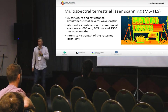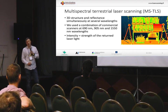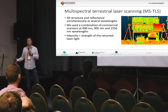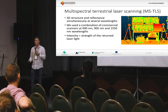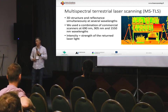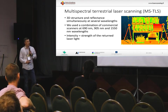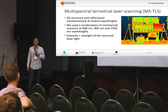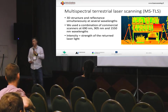I've been using different kinds of commercial scanners, so it's not truly multispectral, because we are not simultaneously getting different wavelengths. I'm using three different scanners that are used consecutively at the same location to get different wavelengths — 690 nm, 905 nm, and 1550 nanometer wavelengths, which are quite common in commercial LiDAR systems. I'm referring to intensity as the strength of the reflected energy from the target.